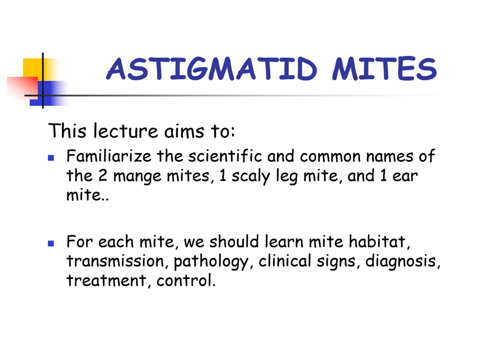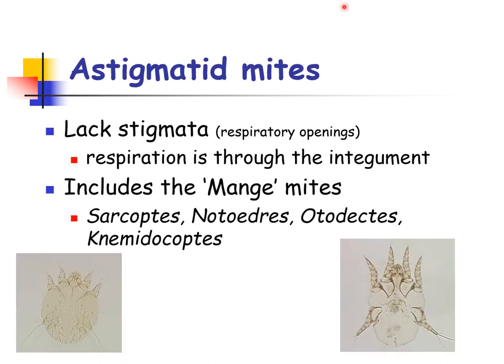Mites are grouped according to the presence or absence of stigmata and the location of the stigmata. Stigmata are also known as the respiratory openings where mites breathe. For the astigmatid mites, they are characterized by a lack of stigmata or respiratory openings, so respiration occurs through the integument or skin. Mange is defined as any kind of persistent contagious skin disease marked especially by eczematous inflammation and loss of hair, affecting domestic animals or sometimes humans, and caused by parasitic mites.